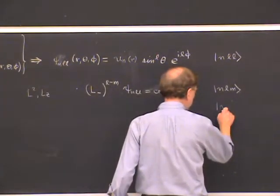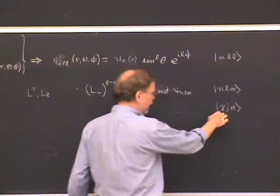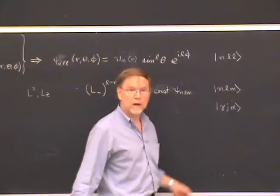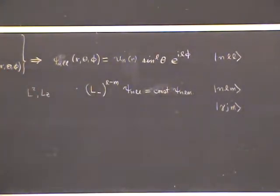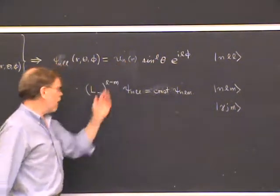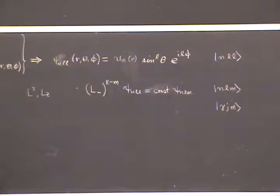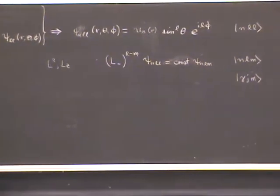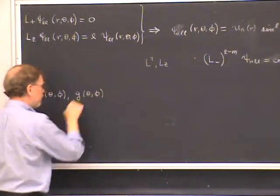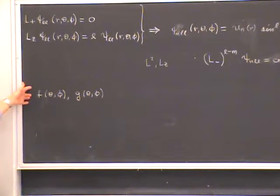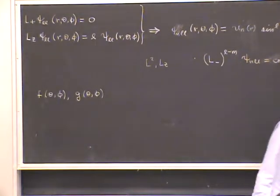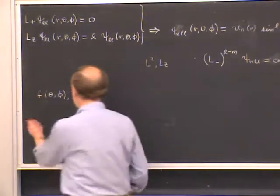There's a slightly easier approach: ignore the radial variable altogether. Instead of talking about functions on three-dimensional space, talk about functions just of the angles theta and phi — functions on a sphere. The radius doesn't matter; we take it to be one and only the angular dependence matters.